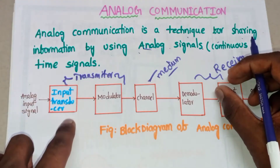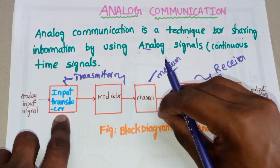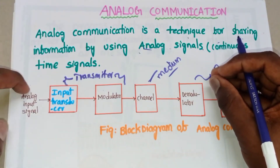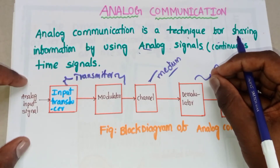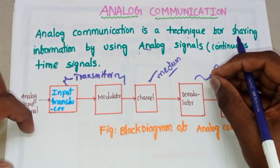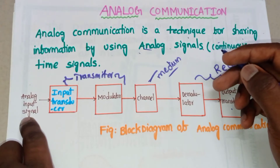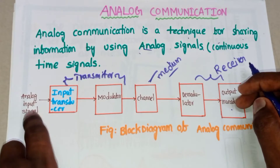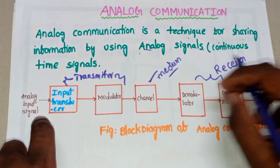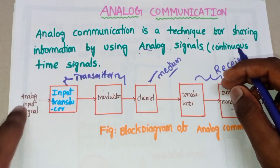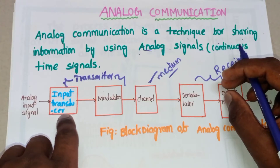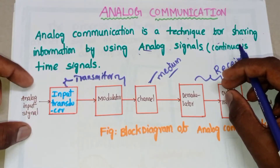A transducer is an electronic circuit used to convert energy from one form to another, or convert information from one energy form to another. The input analog signal — our message signal, which is in the form of audio, voice, or video — needs to be converted into an electrical signal before transmission. The voice signal cannot be transmitted as it is, so the input transducer converts the voice signal into an electrical signal.